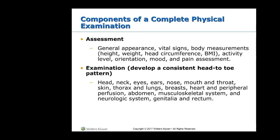Components of a complete physical exam: start with general appearance — do an across-the-room assessment. Get your vital signs, weight, height, and head circumference. Head circumference in babies, BMI in ages 2 and up. Note the child's activity level — are they oriented, walking straight? What is their mood? A pain assessment should also be included. Head-to-toe approach works best.